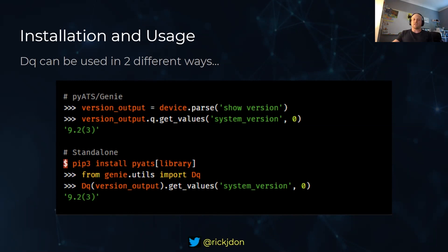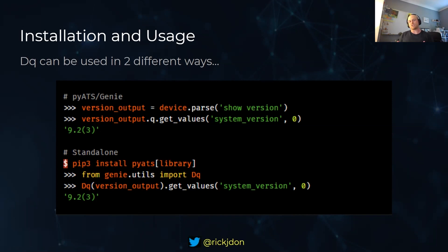The additional methods you put on are exactly the same whether you use PyATS or standalone. In terms of use cases, you can use this with any data structure. If you're pulling out a load of JSON from something like Batfish or NetMiko and parsing data out of that, you can use this. It's really portable.